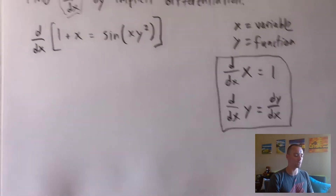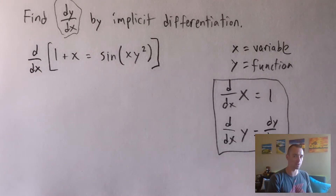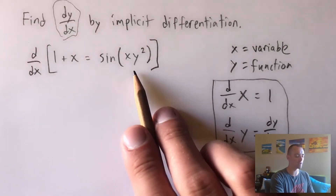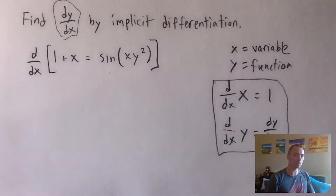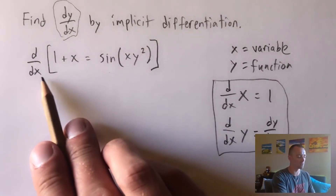When we take the derivative of something that just has x's in it, it behaves the way you expect. But when you take the derivative of something with y's in it — like sine of x times y squared — you have to remember that y is another function within that. So we're probably going to have to use chain rule, product rule, or quotient rule. You can't just say the derivative of y is one.